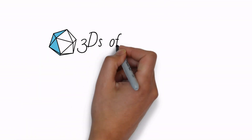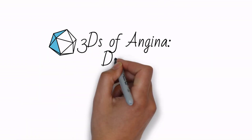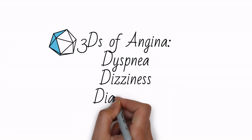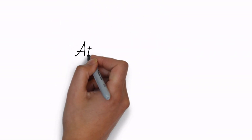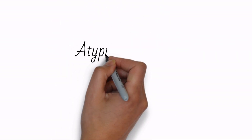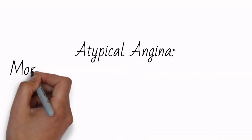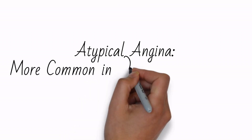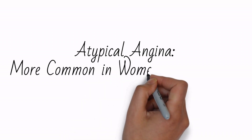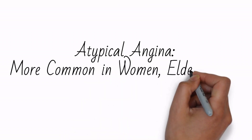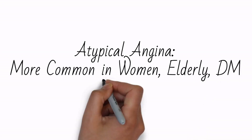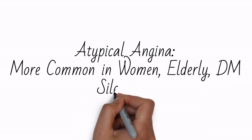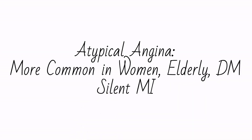The angina may be associated with the three Ds: dyspnea, dizziness, and diaphoresis. Women are more likely to present with atypical angina and may have less specific symptoms such as nausea and vomiting. The elderly and patients with diabetes are more likely to have atypical angina due to autonomic neuropathy, or even a silent MI where they have a heart attack with no symptoms.